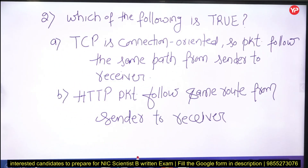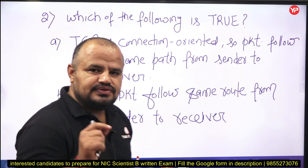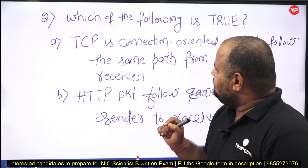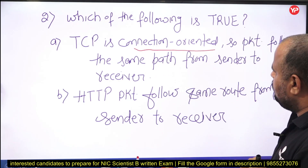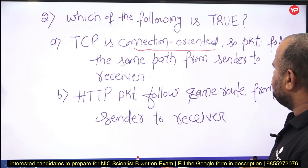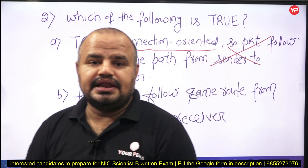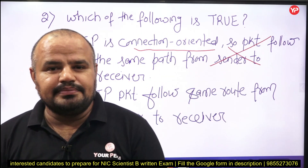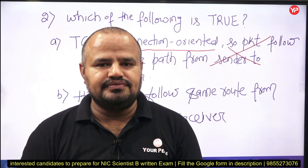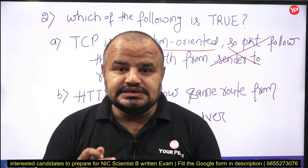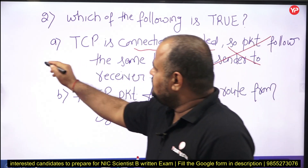Moving to the next problem: which of the following is true? Listen carefully, this is an important problem. TCP is connection-oriented — this statement is the right one. However, it does not mean that packets follow the same path from sender to receiver. Being connection-oriented means we establish a connection before sending data, but it does not mean that each and every packet always follows the same path. So the first option is false.